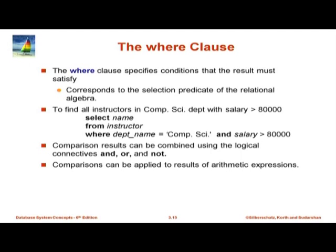Now the WHERE clause. What does the WHERE clause do? It specifies the condition that the result must satisfy. This corresponds to the relational algebra select operation. Here is a simple query: find all instructors in the Comp Sci department with salary greater than 80000. So: SELECT name FROM instructor WHERE department_name = 'Comp. Sci.' AND salary > 80000. Note the capitalization and spaces in the department name must match exactly with the sample database — otherwise the query will give you no output. In the WHERE clause you can have AND, OR, NOT, and arithmetic and string operations.